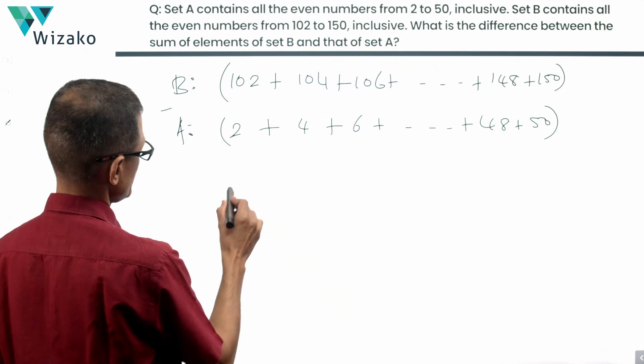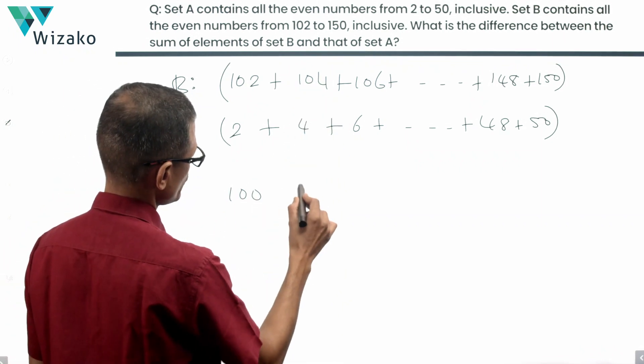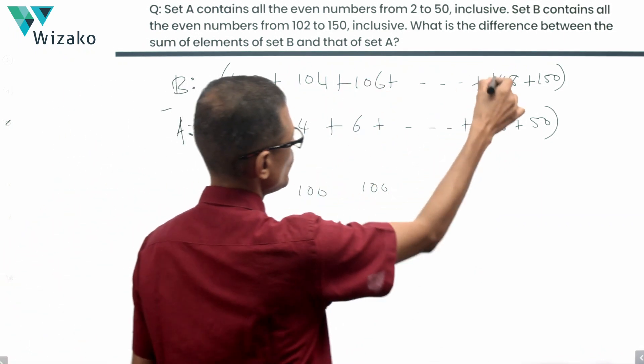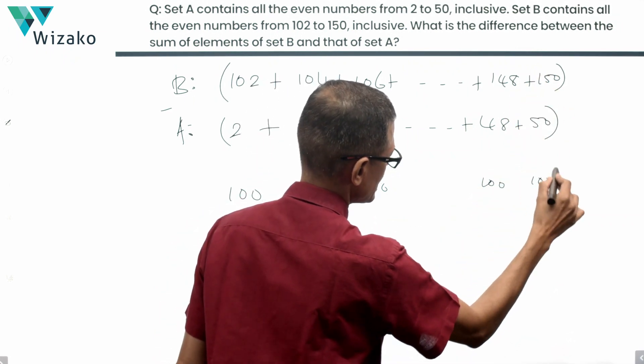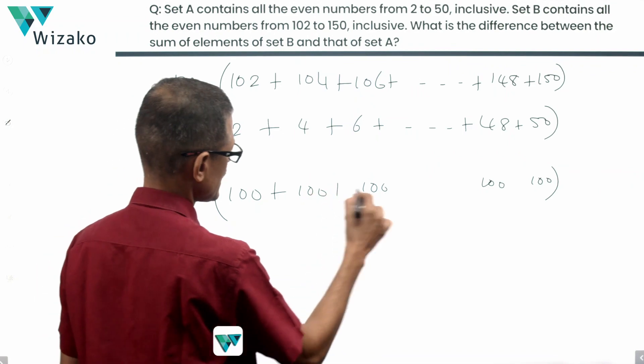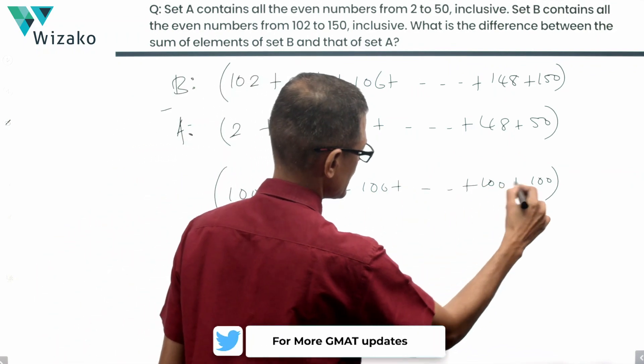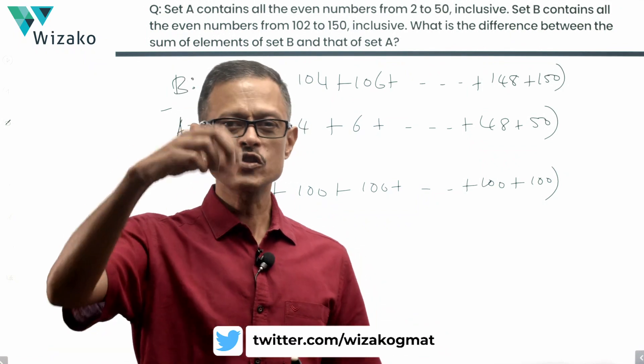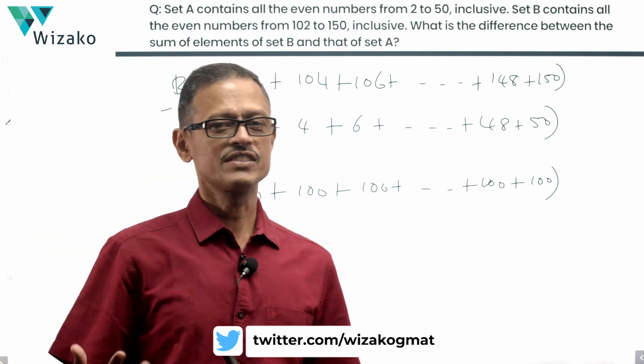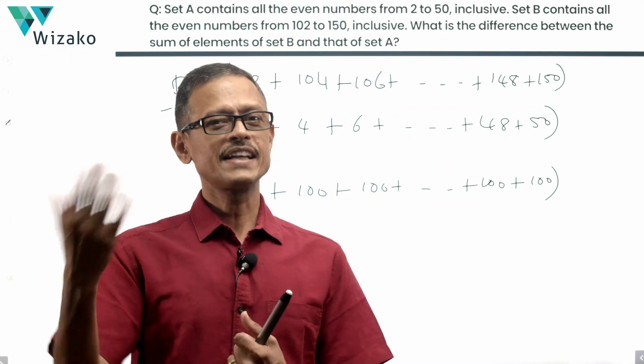102 minus 2 is 100. 104 minus 4 is 100. 106 minus 6 is 100. 148 minus 48 is 100. 150 minus 50 is 100. The difference between the corresponding terms is the same 100. However many terms are there, that into the difference between the corresponding terms which is 100 in each of these cases. There are 25 terms, so 25 times 100.